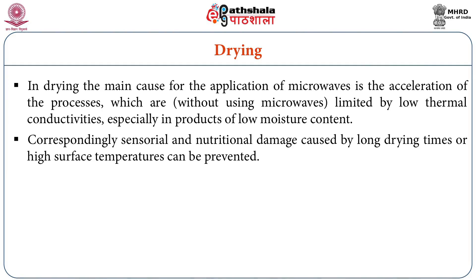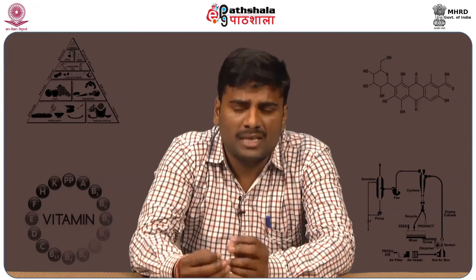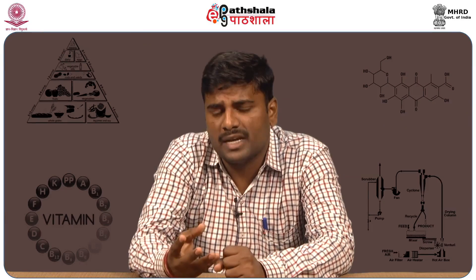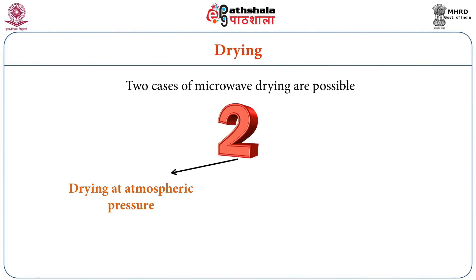Sensorial or nutritional damage caused by long drying times or high surface temperatures can be prevented using microwave heating. In conventional drying, exposure for very long periods may cause nutrient loss, damage, and color changes — but these problems are reduced in microwave heating. Microwave heating also avoids case hardening, where grain or vegetable surfaces become shrinkled and hard during drying. Two cases of microwave drying are possible: drying at atmospheric pressure and drying with applied vacuum. Combining microwave heating with vacuum or air drying gives better results.